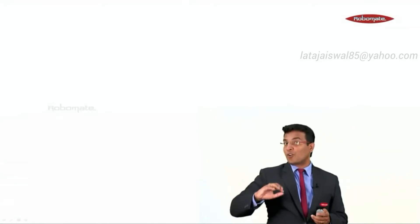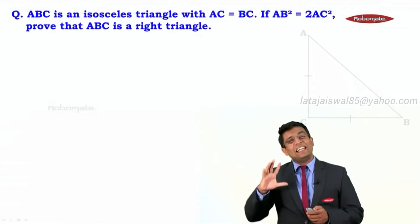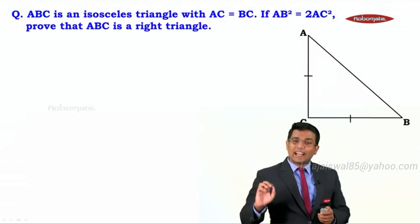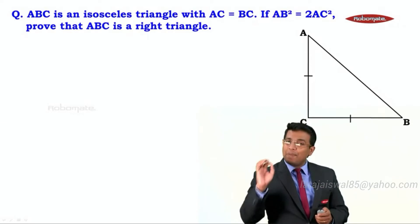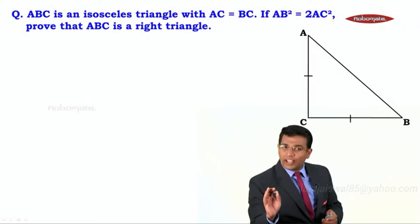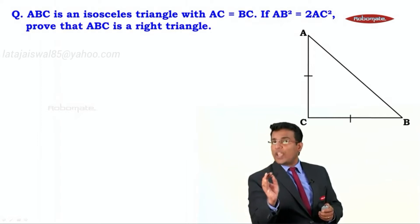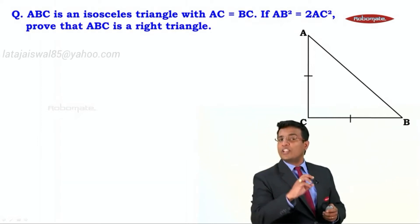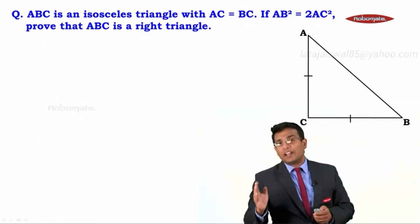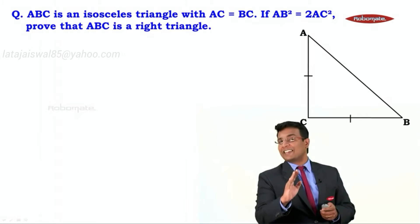This is a very important sum based on the converse of the theorem of Pythagoras. The problem states that ABC is an isosceles triangle with AC equal to BC, and if AB square is equal to twice of AC square, then prove that triangle ABC is a right triangle.